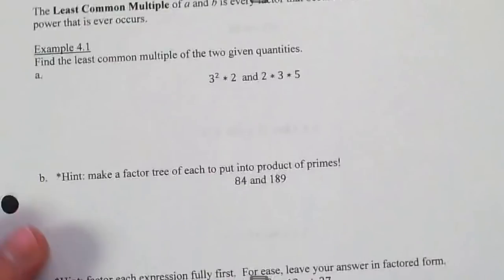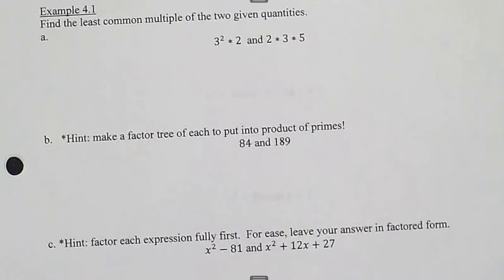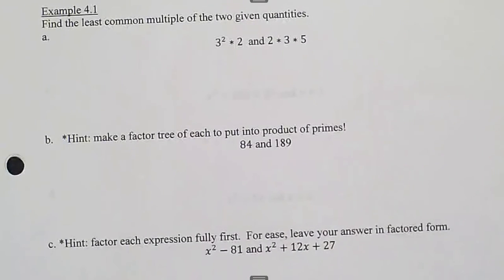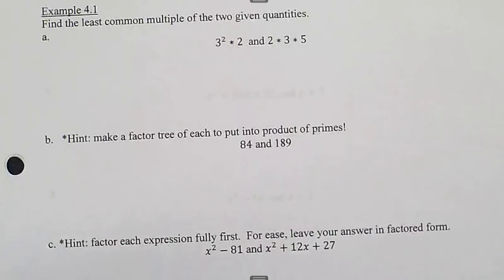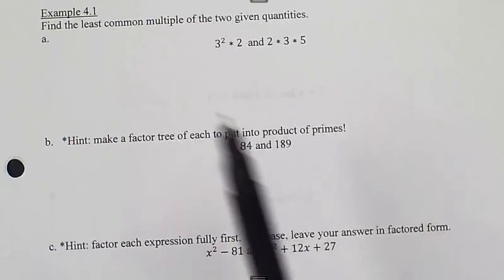We're just going to find the least common multiple — not do anything with it yet. In plain language, the least common multiple is the smallest value divisible by everything. If I'm finding the LCM of four different numbers, I'm looking for the smallest number I can divide evenly — no decimal, no remainder — by each of those integers.